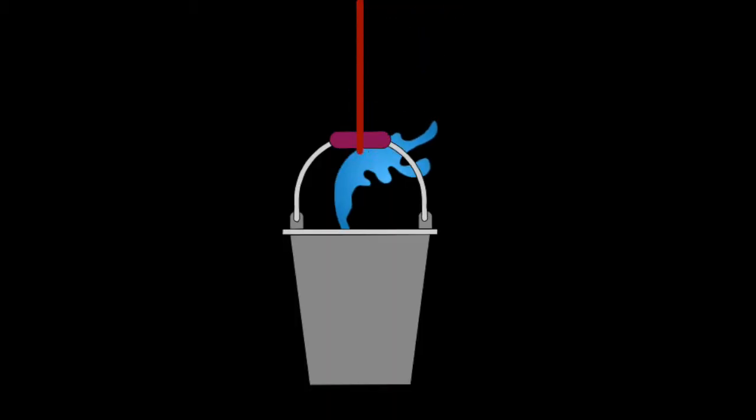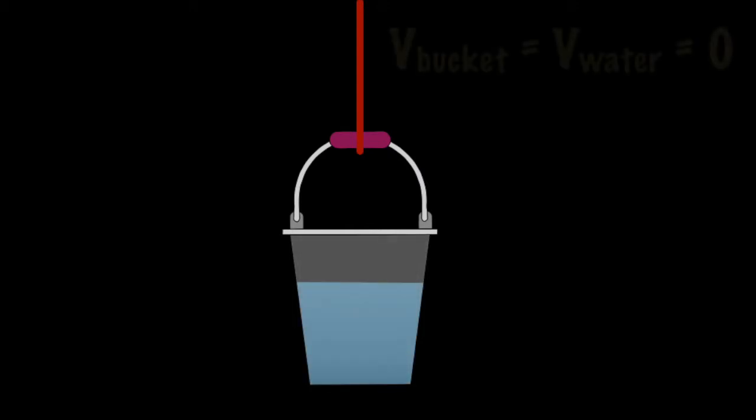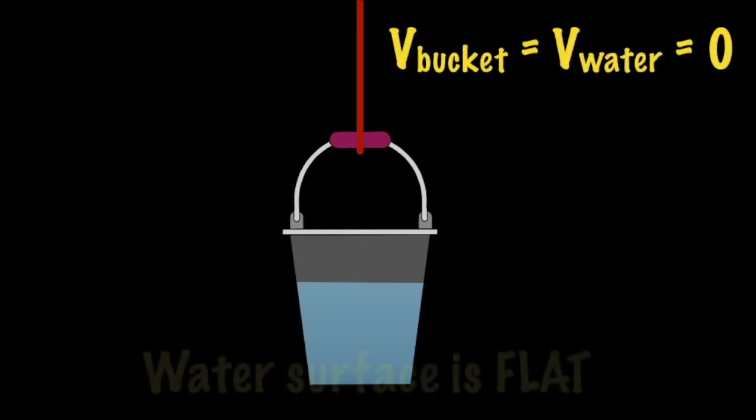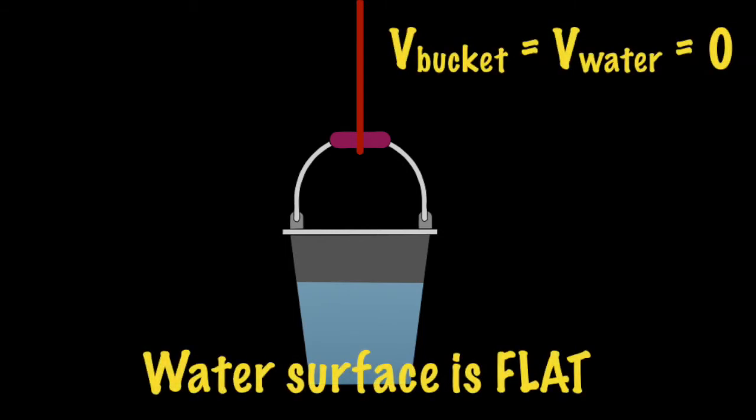Consider a bucket of water that is suspended by a rope so that it is free to rotate. Consider a case when the bucket and the water both are at rest. The surface of the water is flat.